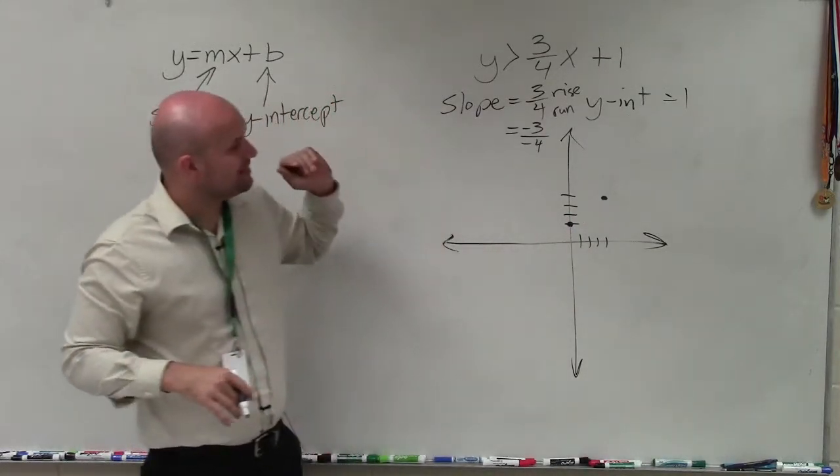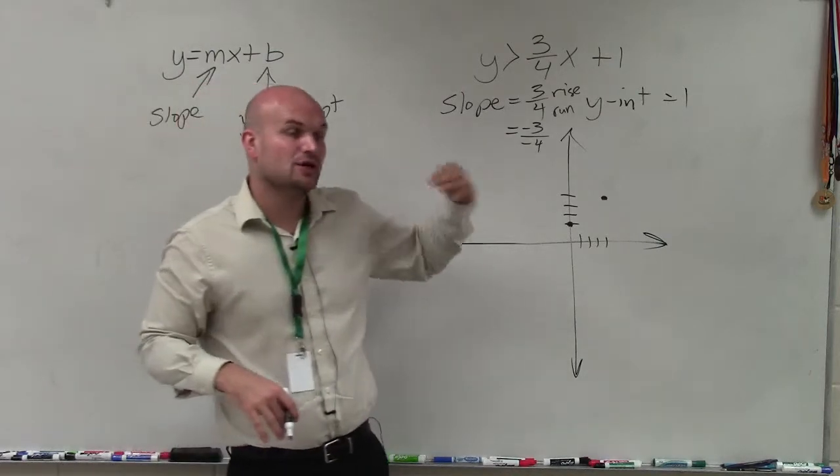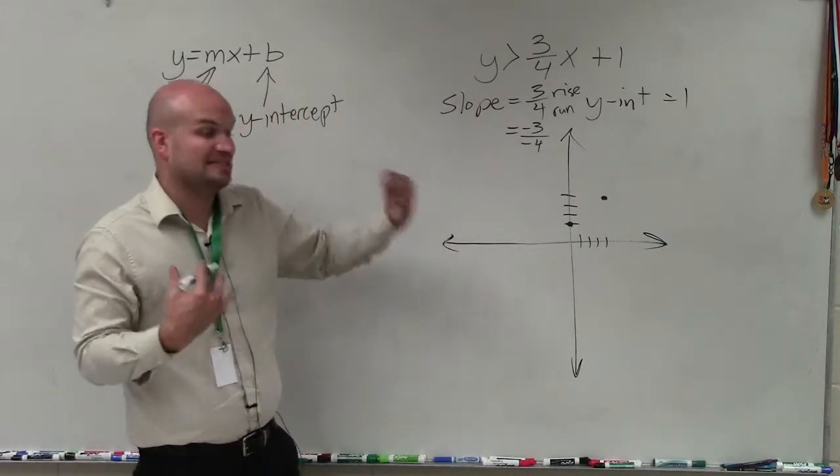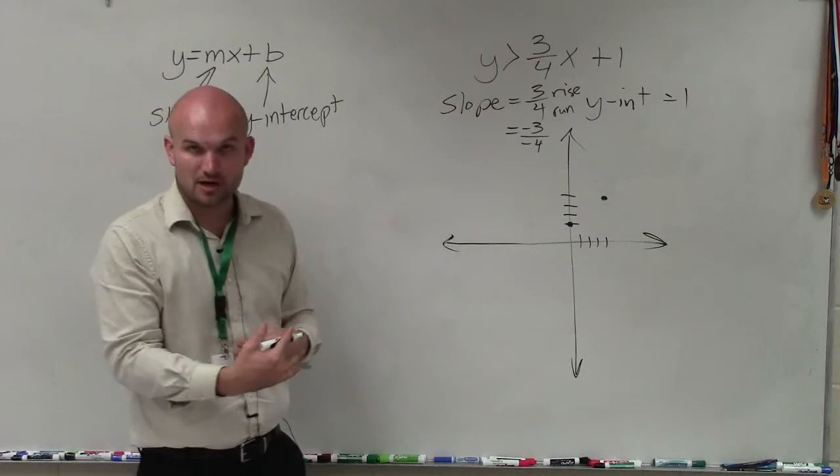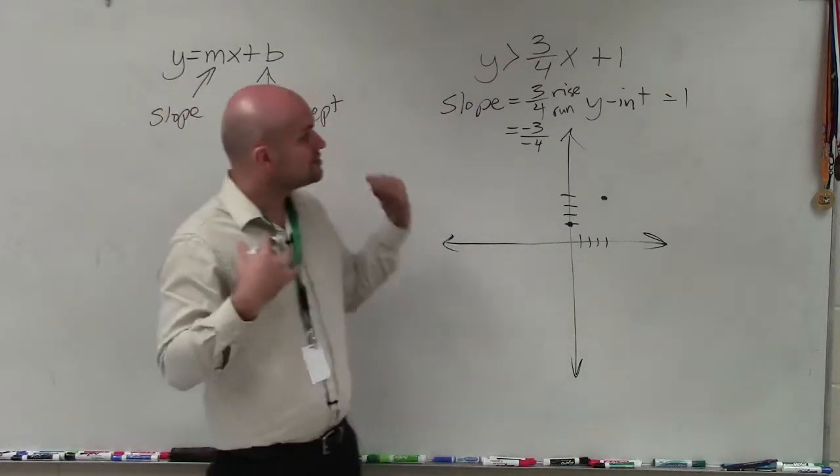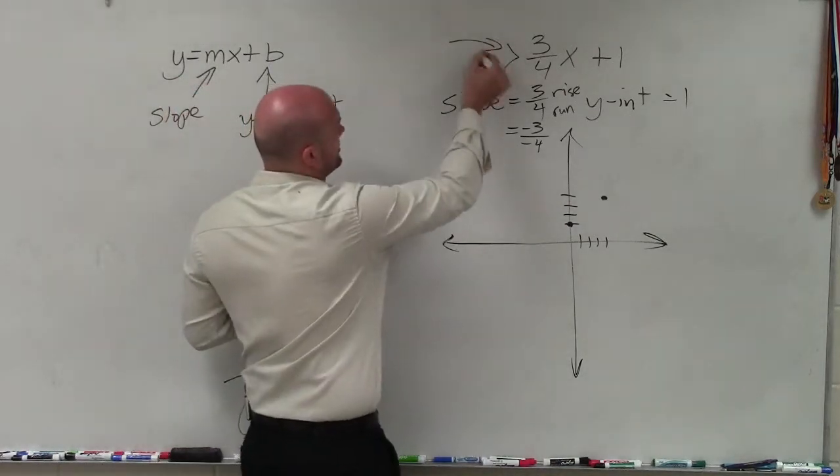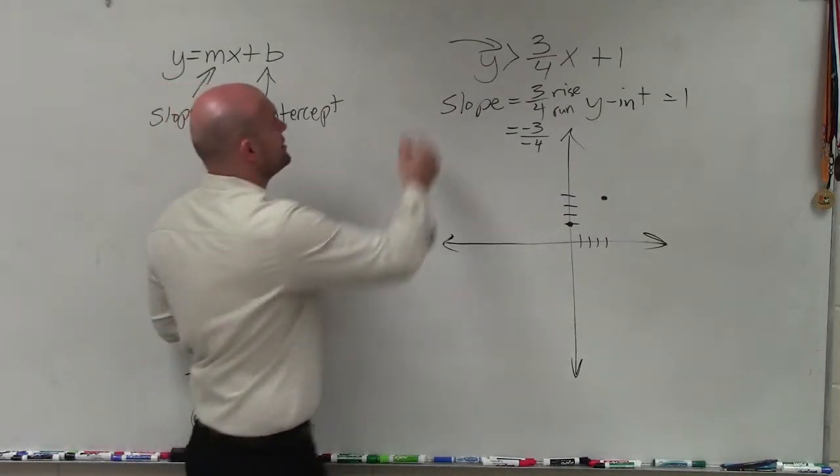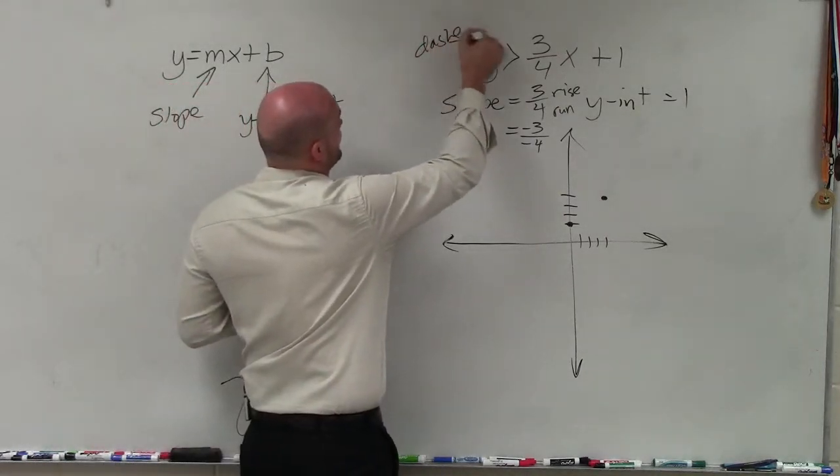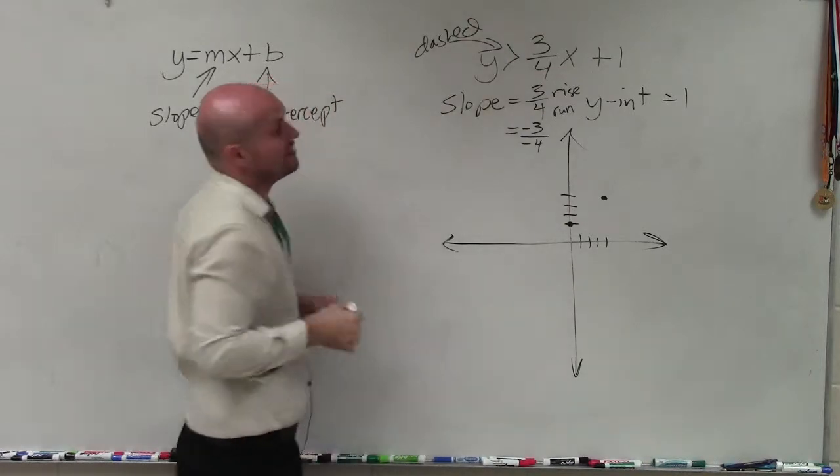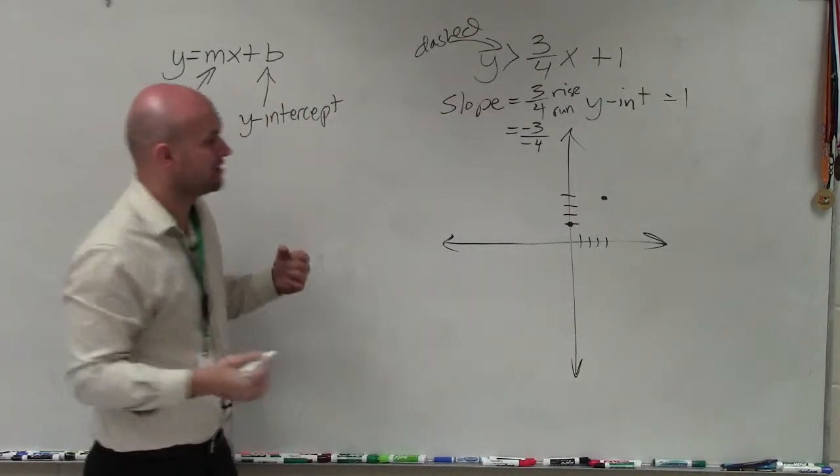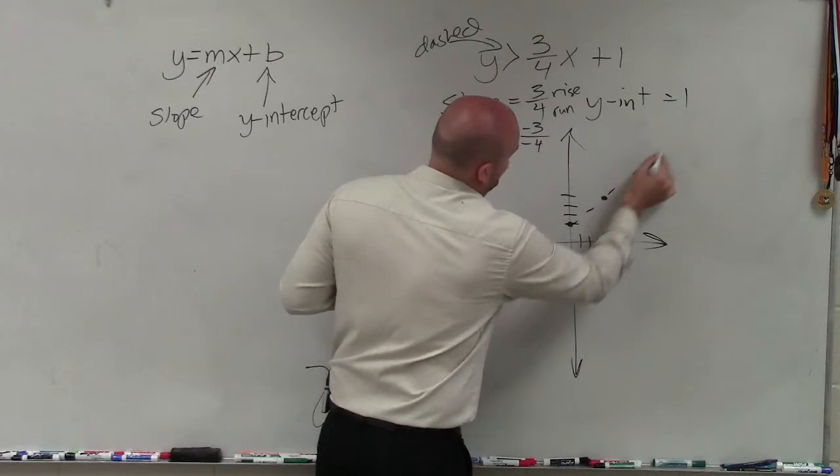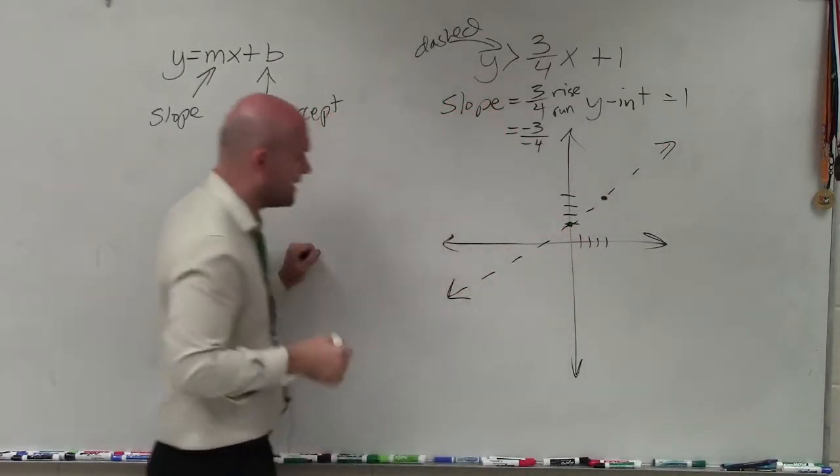The next thing is now to be able to identify, is my line going to be a part of my solution or not? Is it going to be dashed or solid? If it's dashed, it's not a part of the solution. If it's solid, it is. So to determine that, we look at our inequality symbol. And since my inequality symbol is greater than, not greater than or equal to, I know I'm going to be using a dashed line. If it was less than or equal to or greater or equal to, you're going to have solid. So I'm just going to go ahead and graph my dashed line here.